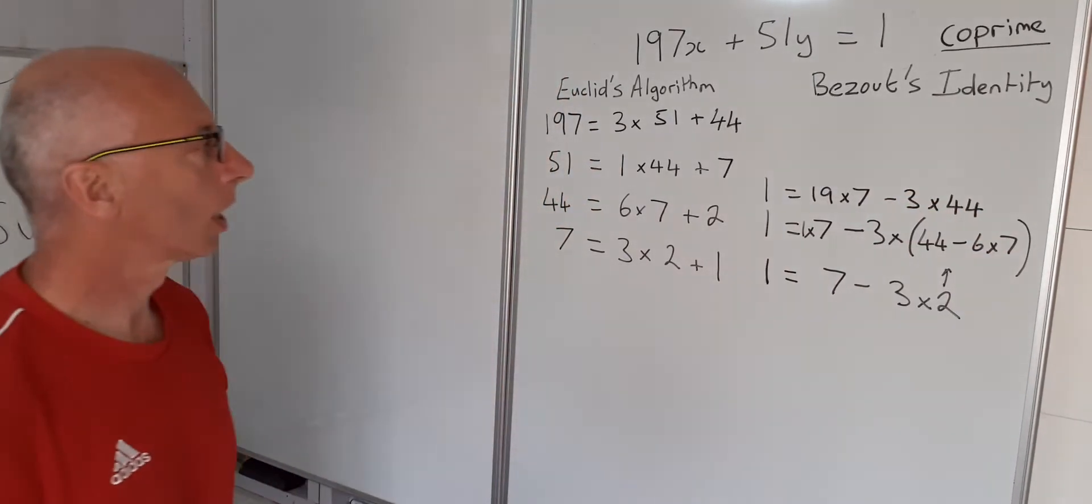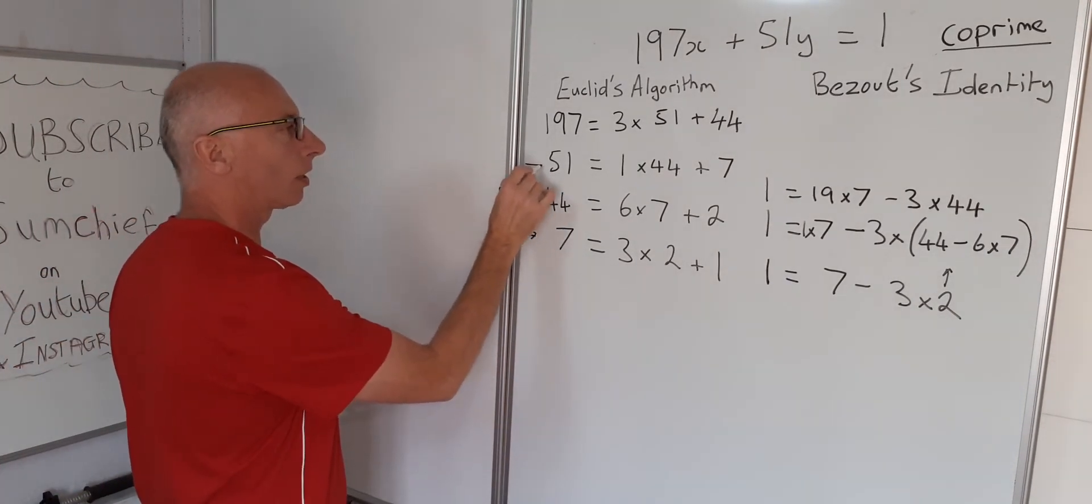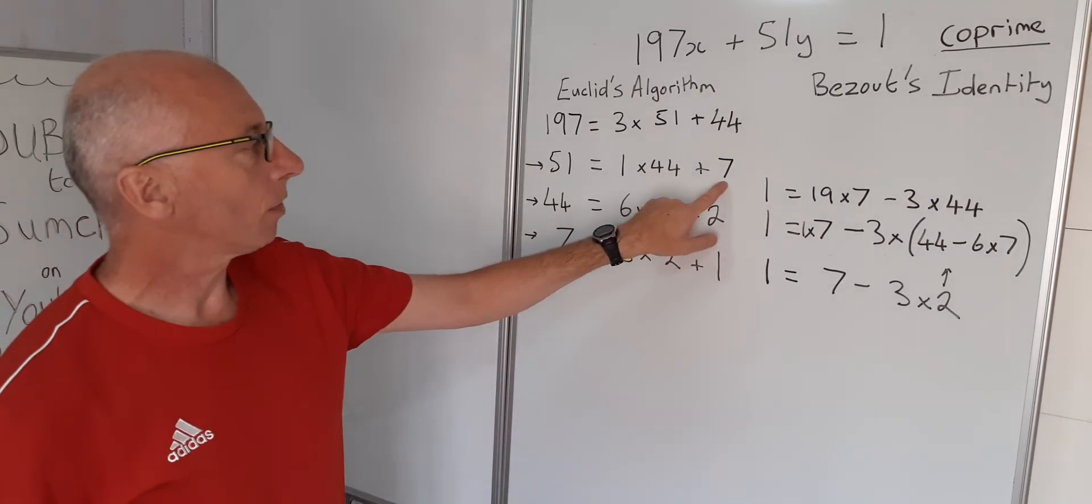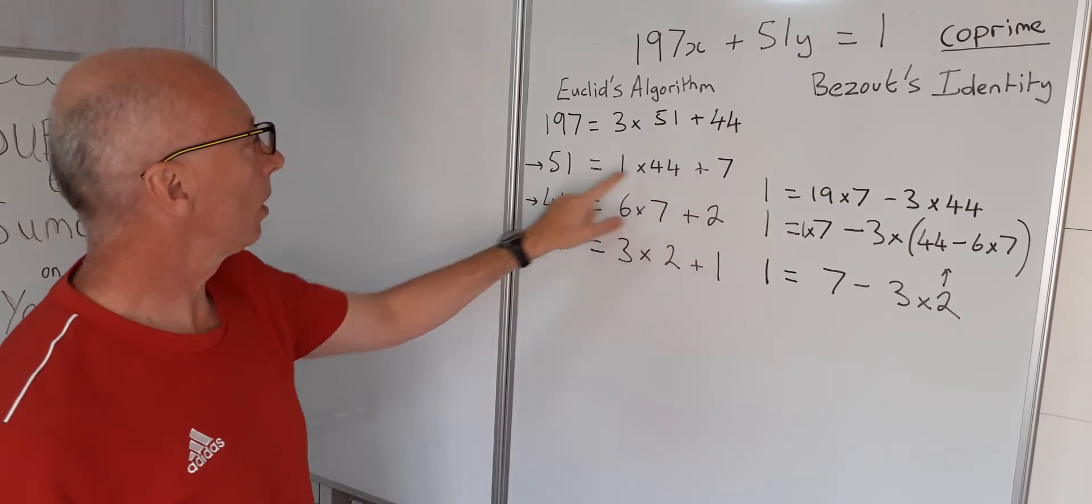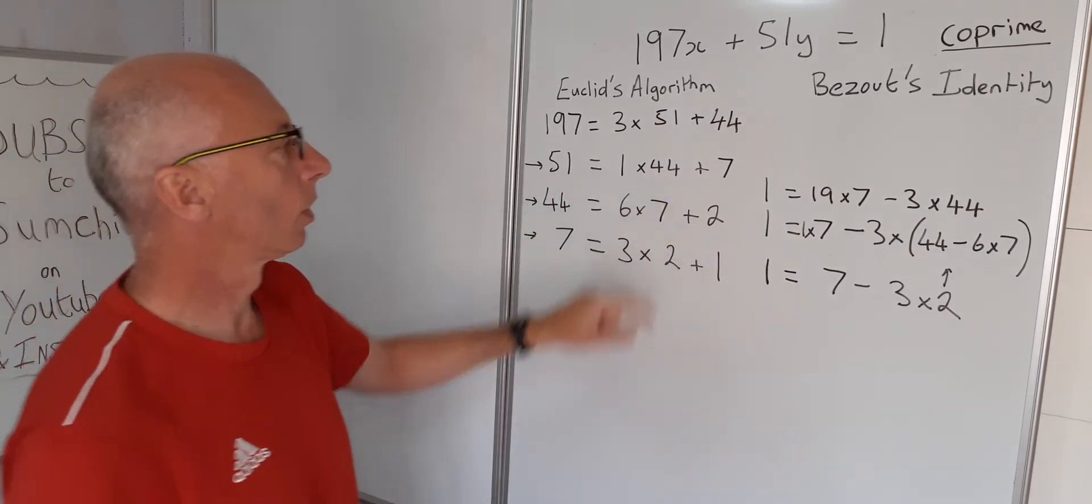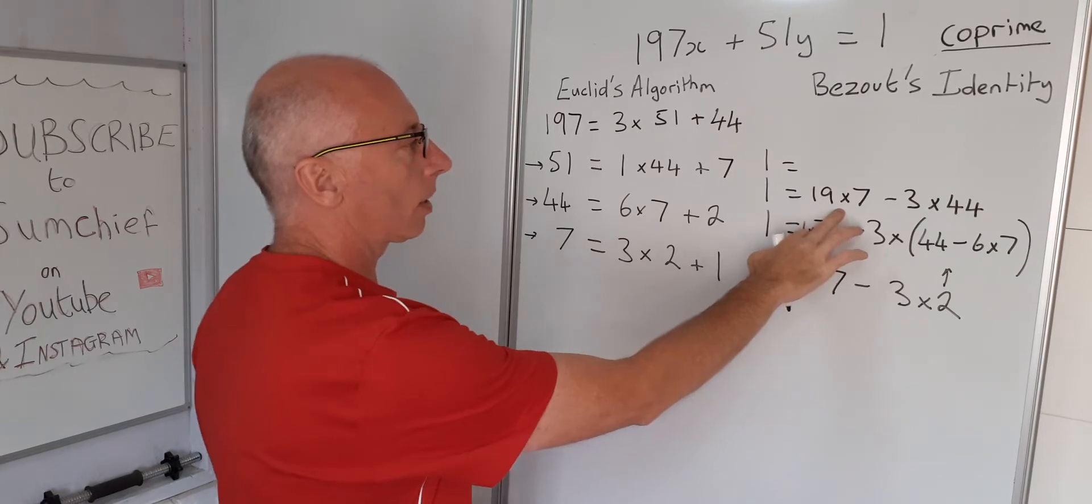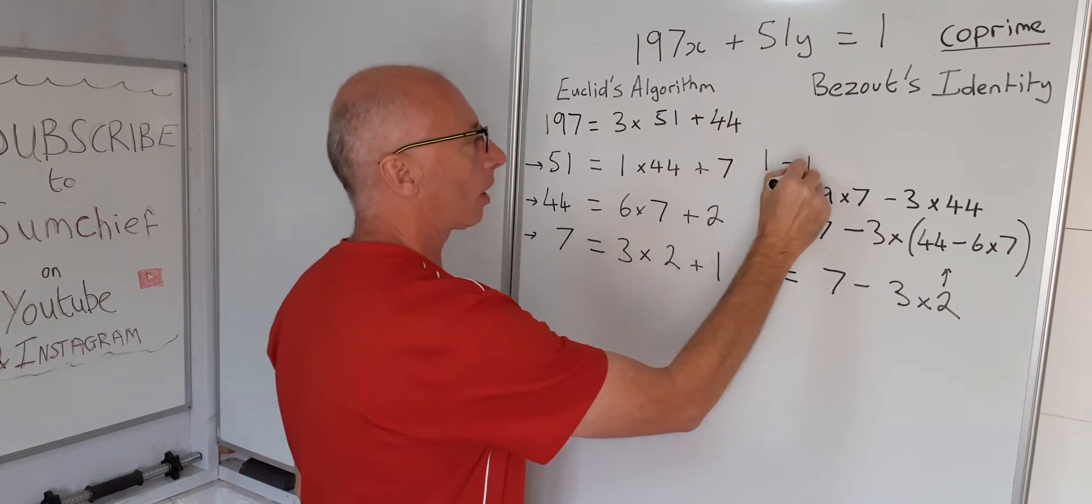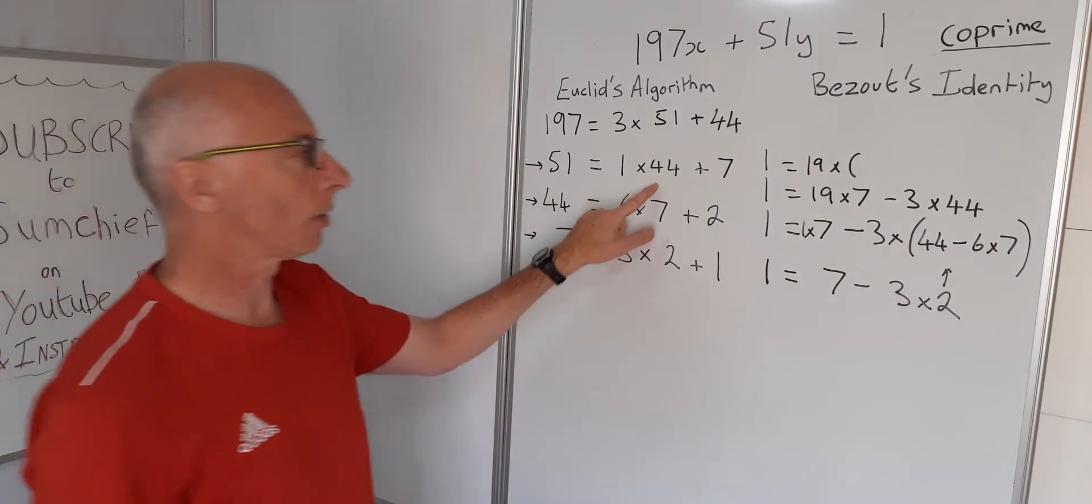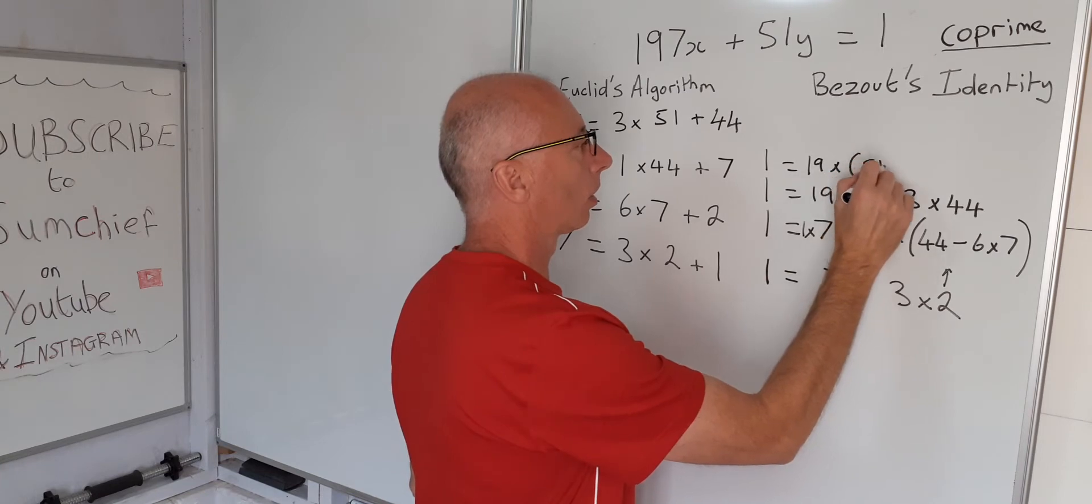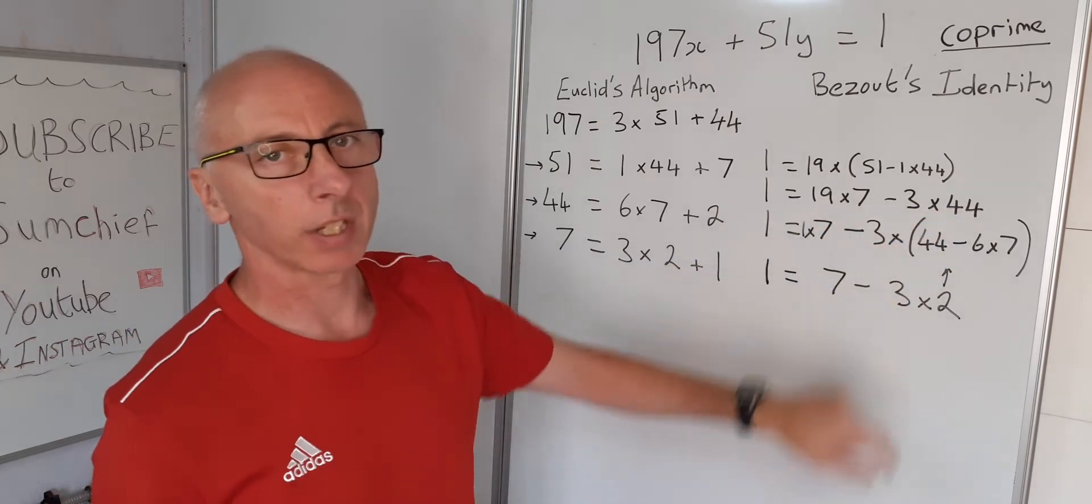Okay, so now we move up to the next line. So this line is done, this line is done, now we're on this one. So we've got our 7 remainder here which we have here. So we know from this here that 7 is 51 minus 1 times 44. So now what we write here is 1 equals 19 times 7, so 19 times what we have for our value of 7 here which is 51 minus 1 times 44. And then we can just continue here with the minus 3 times 44.